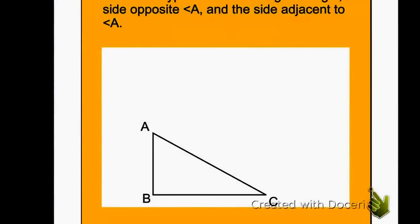All right, what we want to be able to do by the end of the video today is to label the parts of the right triangle. Remember, it is always labeled according to an acute angle, so you have to be told the acute angle. In this case our acute angle is going to be angle A. It helps if I identify angle A in the picture, so I'm going to label it with a curve mark like we've always done.